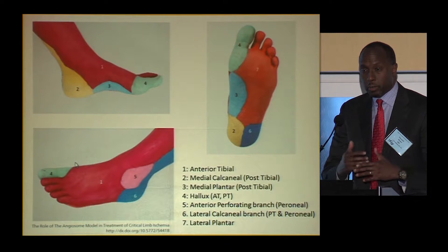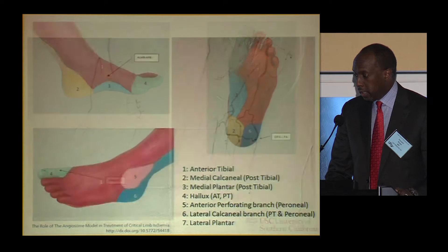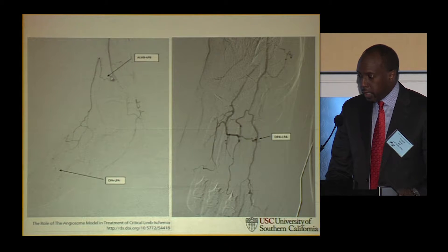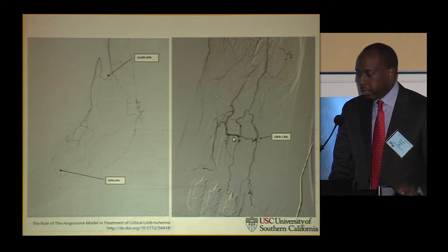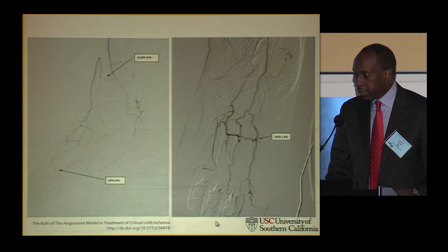Both angiosomes can interact and form collaterals — anastomotic or choke vessels, as they're called. You can see where the peroneal interacts with the anterior tibial, and where the posterior tibial and anterior tibial interact to form some type of anastomosis, with mixed flow in the angiosome out to the great toe.